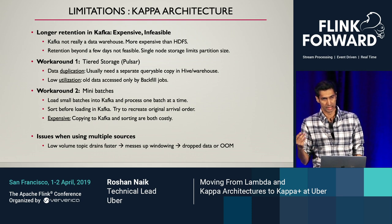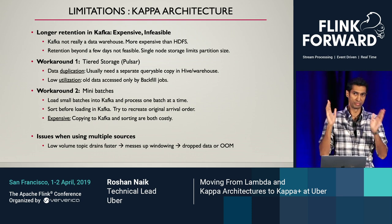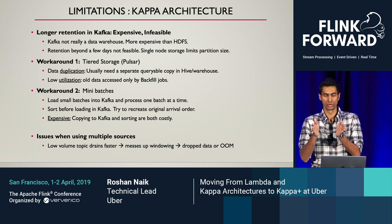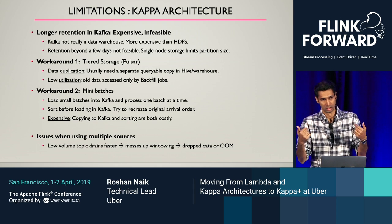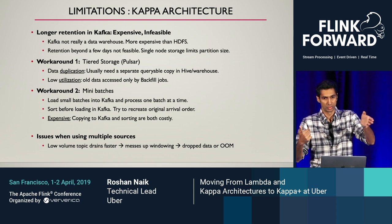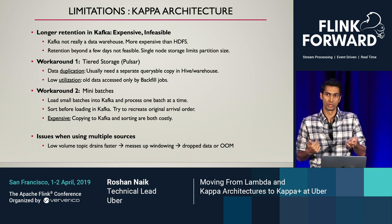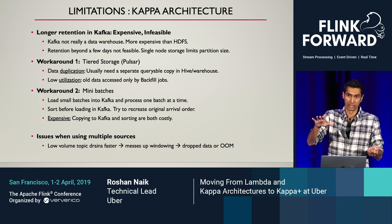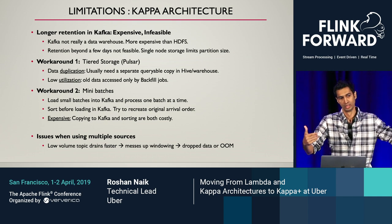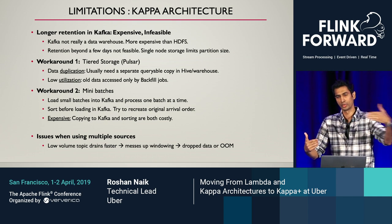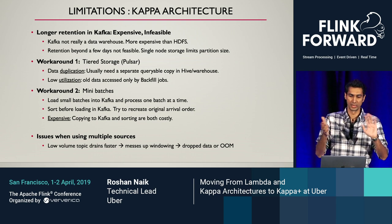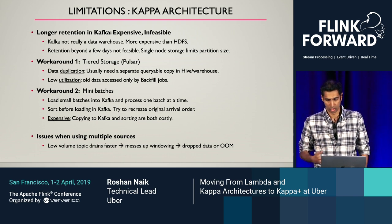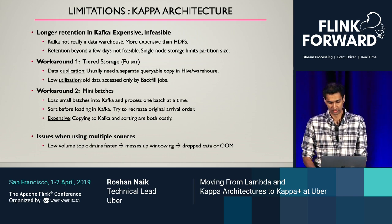A third problem is when you have two sources you're trying to join — say two topics, one low-volume and one high-volume. The low-volume topic goes really fast, and that messes up the windowing, leading to dropped data or out-of-memory errors.